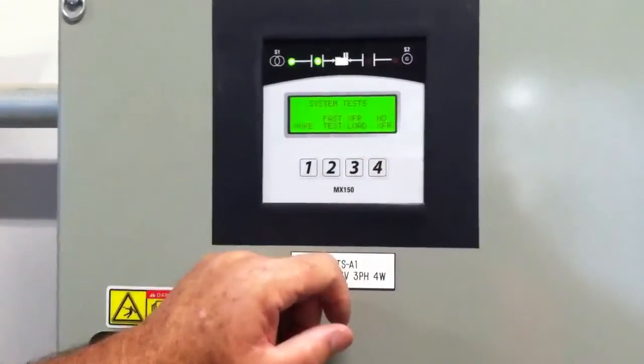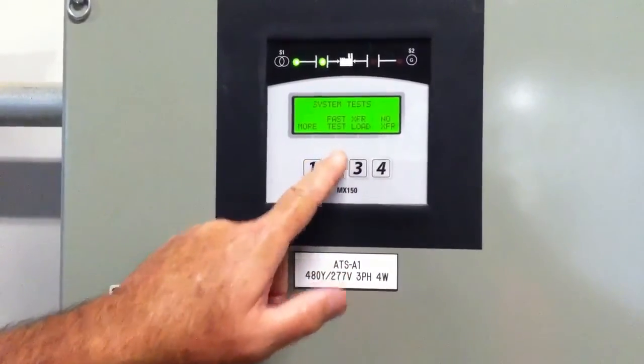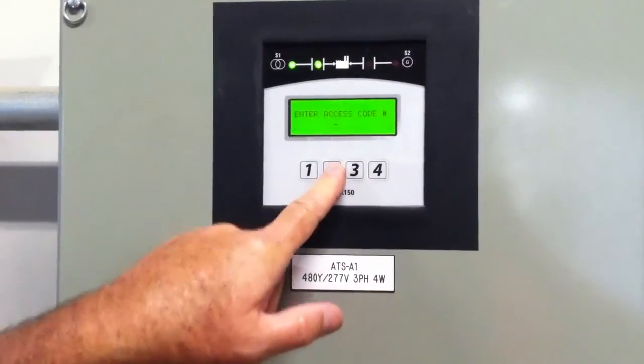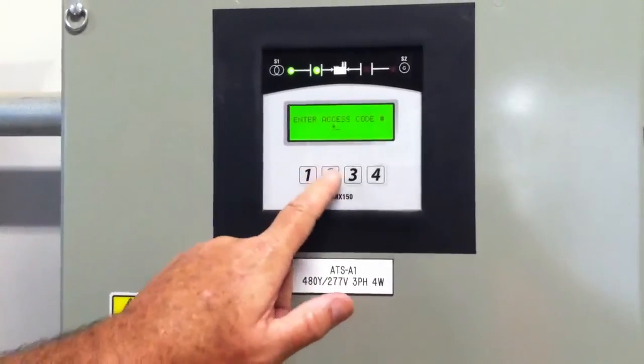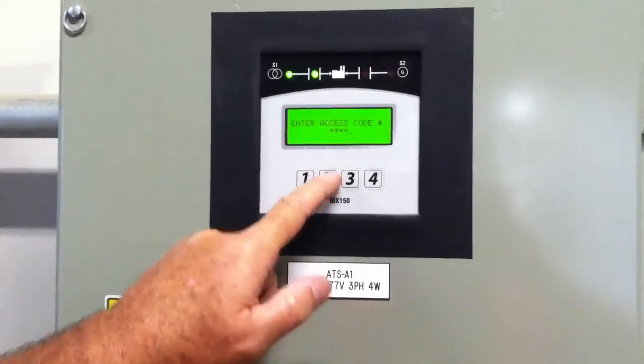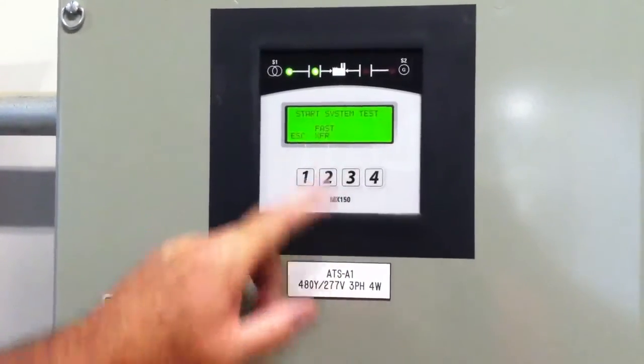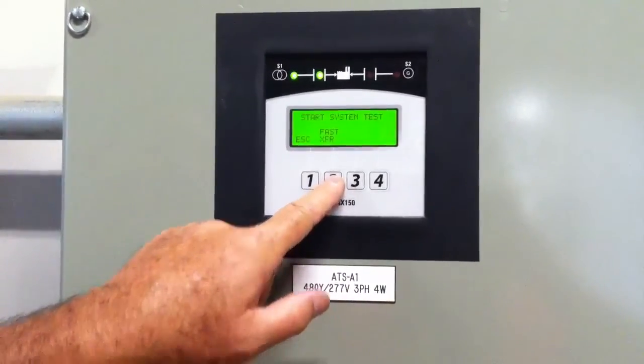So I'm going to go ahead and take you through that test. You push the test button. We're going to do what we call a fast test, so that's button 2. We're going to enter the access code, which is 1, 2, 1, 2, 1, 2, and then we're going to hold this until the operation takes place.